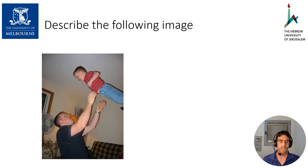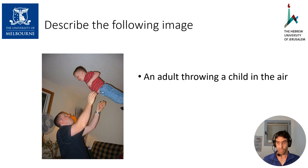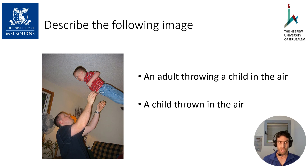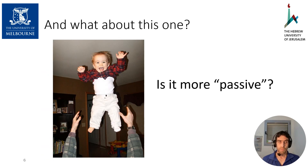Let's start with an example. Say we want to describe the following image. We can say 'an adult throwing a child in the air,' but also 'a child thrown in the air.' Both are correct, but one of them would be preferred by most English speakers, probably the first one in this case. But what about this image? You probably wouldn't describe it by 'an adult throwing a child in the air,' even though clearly that's exactly what happens here. Intuitively, this is a more passive image, and most people would prefer 'a child thrown in the air.'